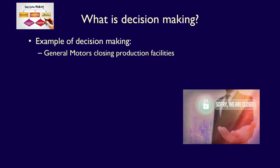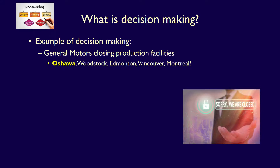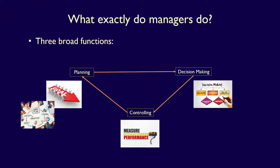For example, when GM was making the decision on which production facilities to close down, they likely considered not only the location in Oshawa, but also their plants in Woodstock, Edmonton, Vancouver, and Montreal. Using information from their accounting system would have helped them choose between the five plants, resulting in their decision to close the Oshawa production facilities. So, management's responsibilities include planning, controlling, and decision-making — a continuous process which organizations must use in order to be successful in the long term.